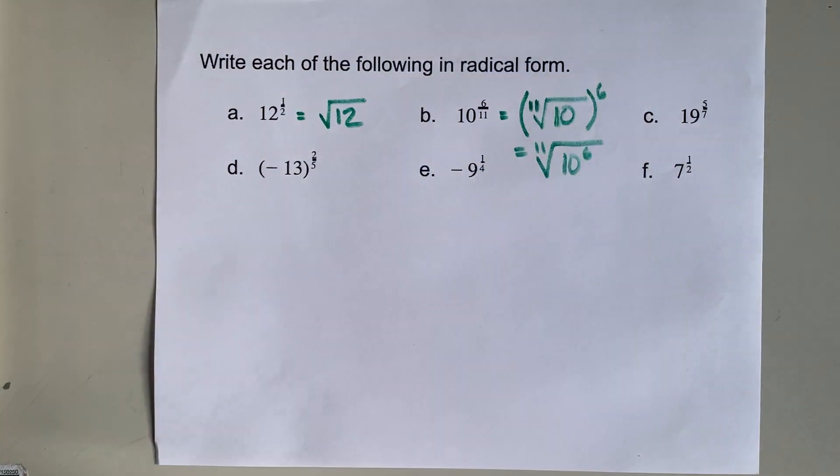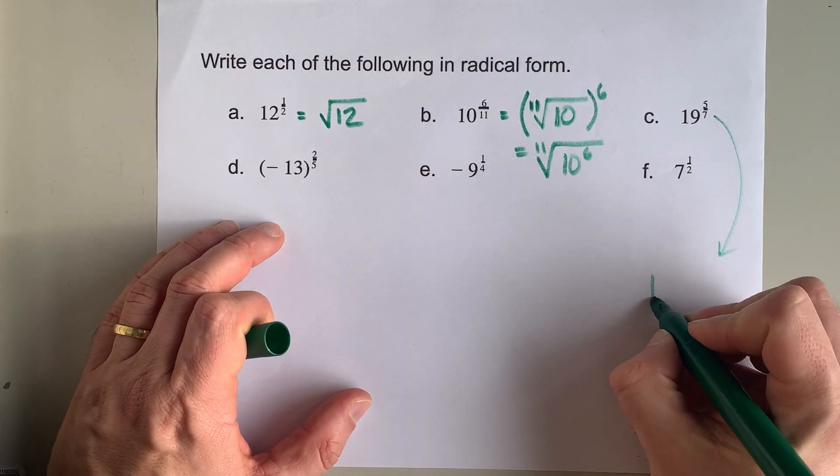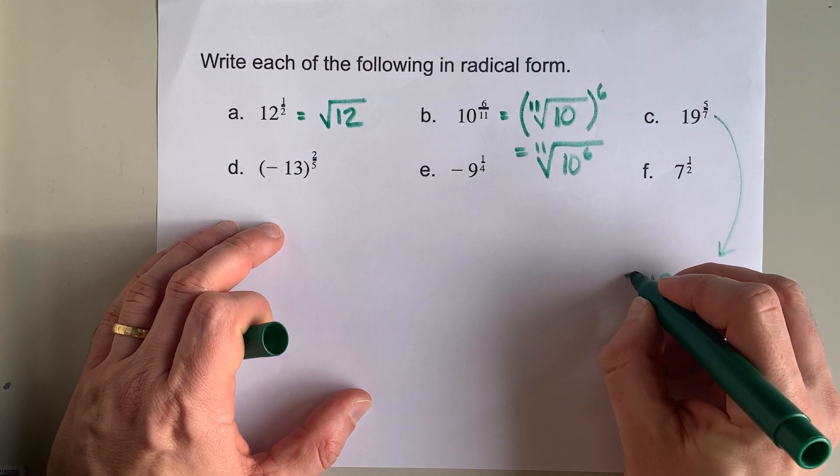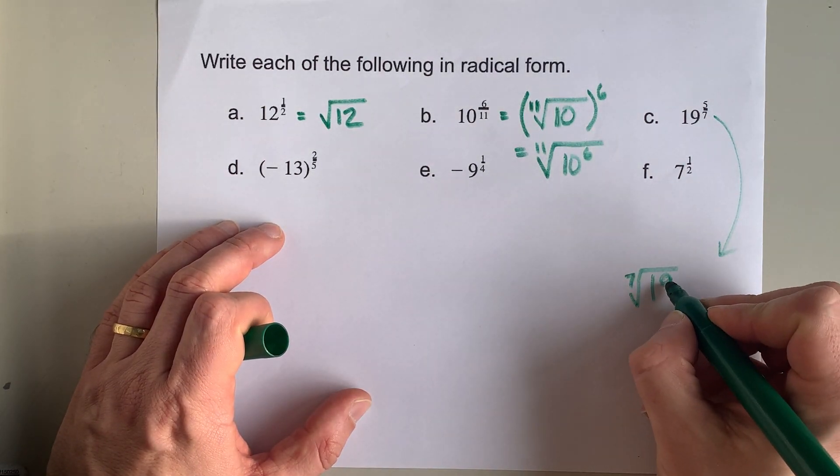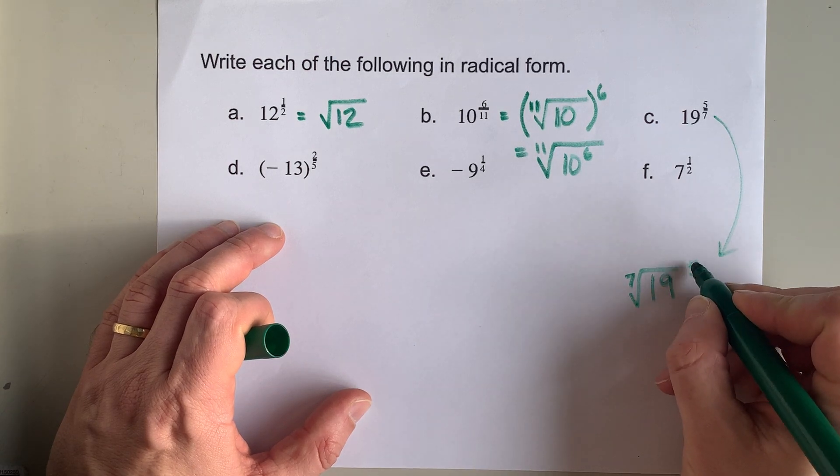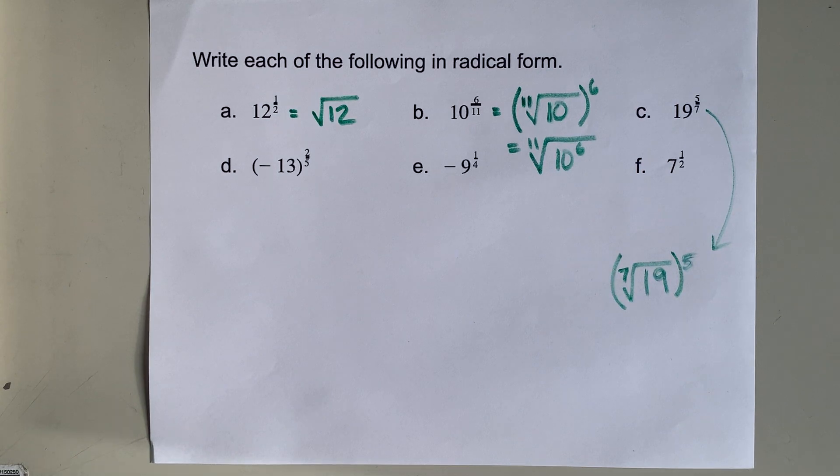Let's do it one more time for this 19 to the power of 5 sevenths. That is 19, and you are taking the 7th root of it. Then the power of 5 can either go on the 19 or it can be applied afterwards. This will be the last thing I ever write with that marker. There you go. That's the equivalent of 19 to the power of 5 sevenths.